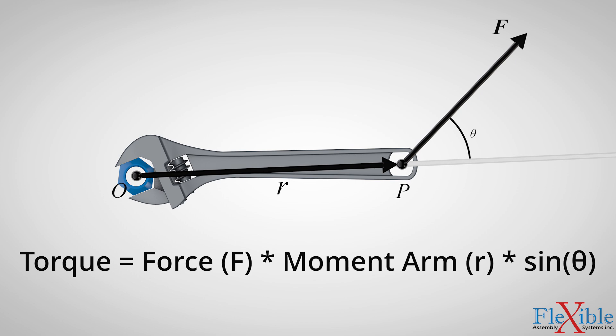This shows how if we were to tighten the same bolt with the same amount of force but instead used a longer wrench, our moment arm would be a higher value, thus creating more torque through leverage.